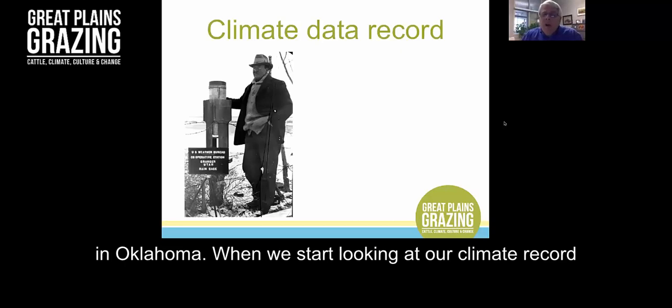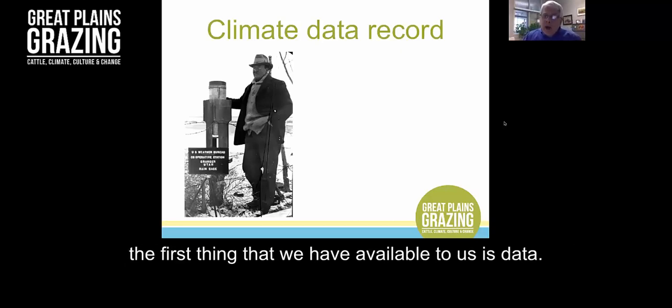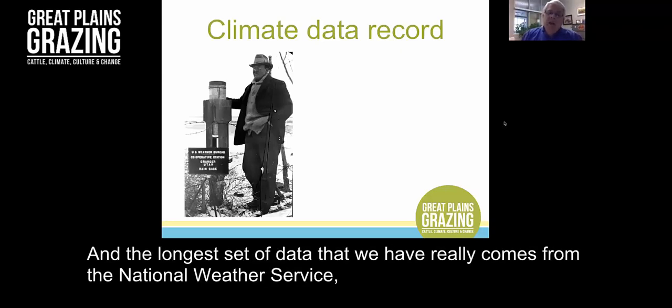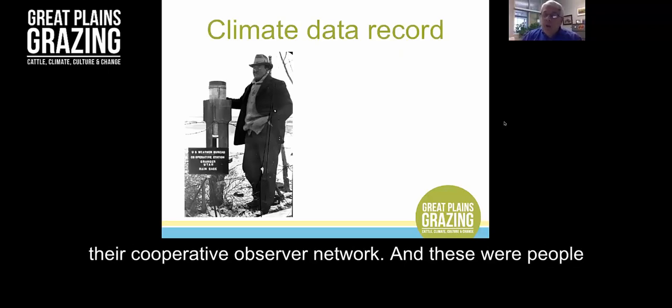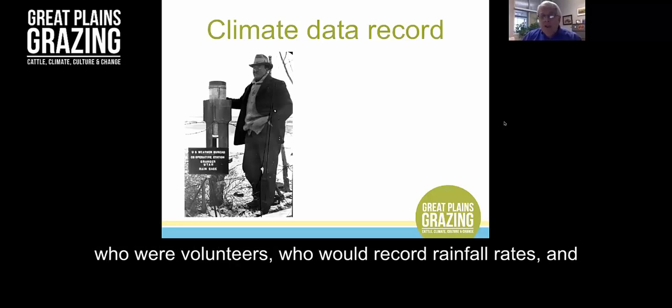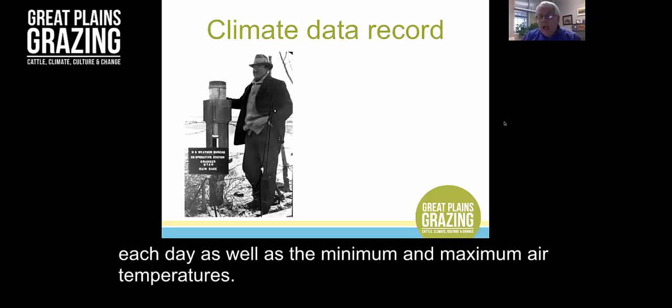When we start looking at our climate record, the first thing that we have available to us is data. The longest set of data comes from the National Weather Service Cooperative Observer Network. These were volunteers who would record rainfall rates each day as well as the minimum and maximum air temperatures.